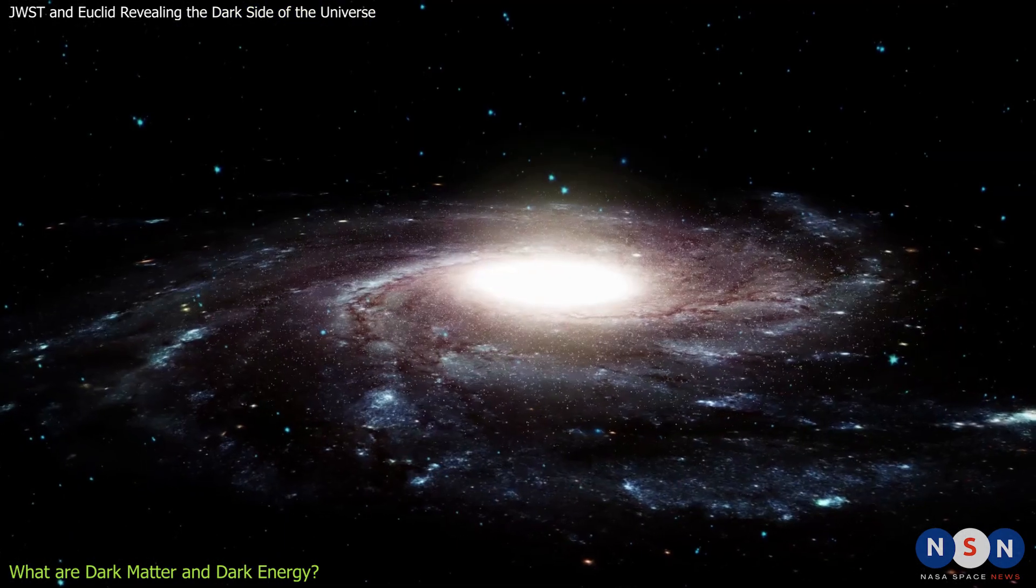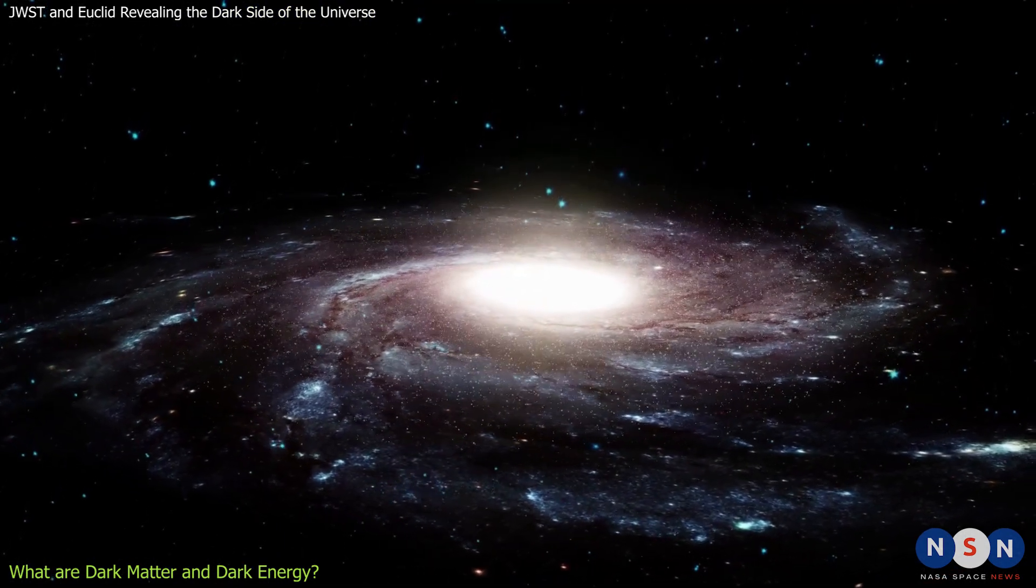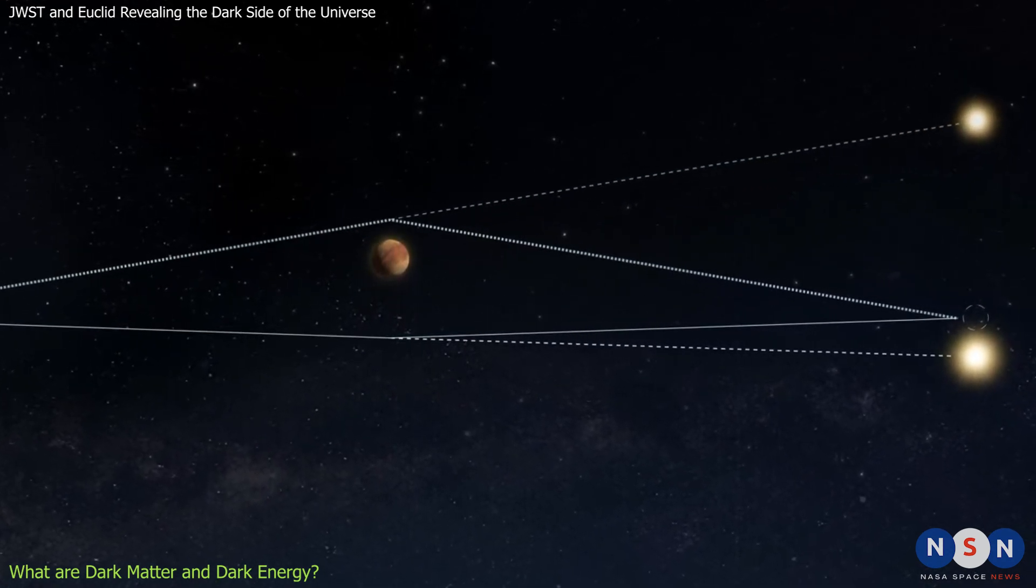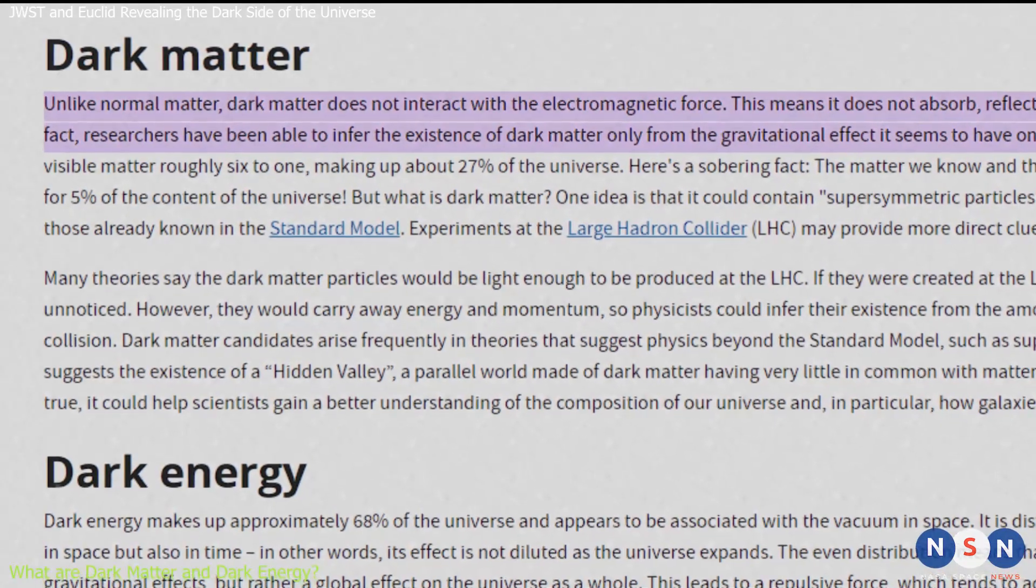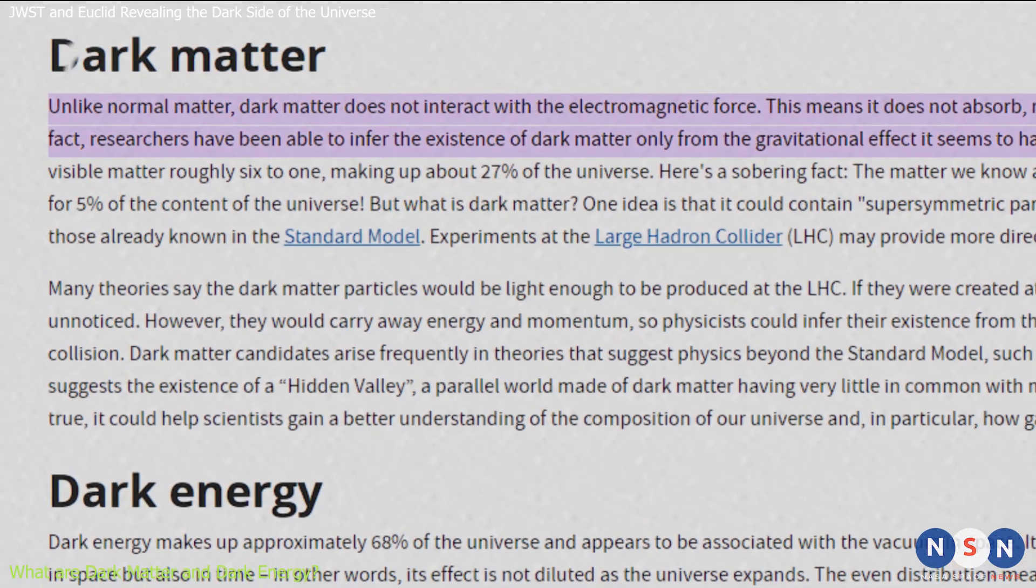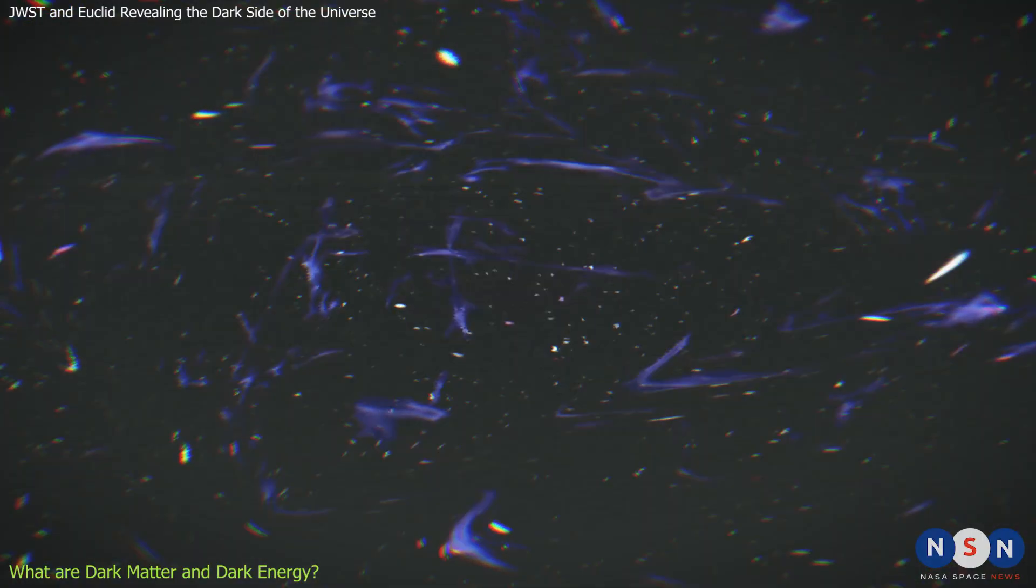For example, dark matter affects the way galaxies rotate, the way light bends around massive objects, and the way structures form in the universe. Scientists think that dark matter makes up about 27% of the universe, but they don't know what it is made of.